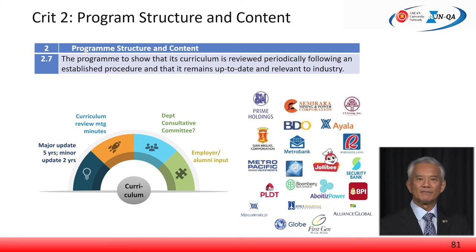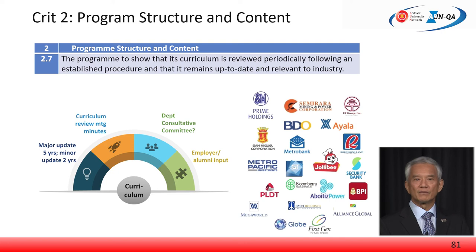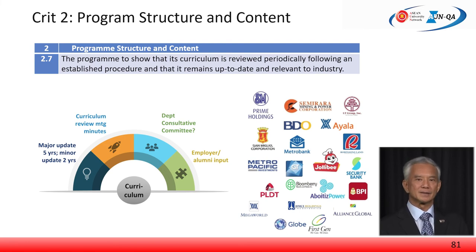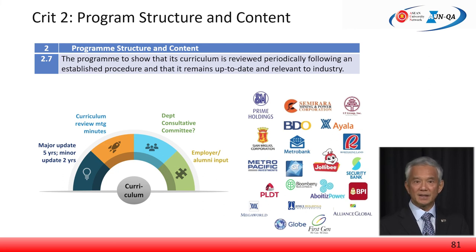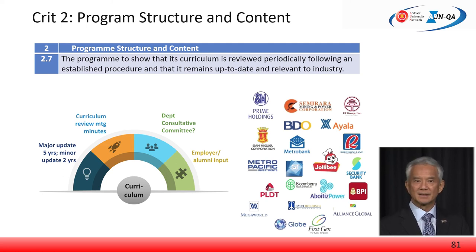The last requirement of Criterion 2 asks to provide evidence that the curriculum has in place a mechanism for its regular review. This could be a curriculum review committee — minutes of annual discussions would provide evidence that curriculum issues have been discussed. Input from various sources needs to be shown, such as from a selected list of alumni and current employers. Many programmes have consultative committees with serving members over a two-year cycle, allowing the committee to follow the programme over a number of years and provide more meaningful suggestions for curriculum improvement, versus getting feedback from alumni and employers only at a single point in time, like a survey.